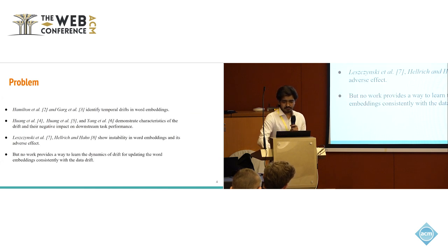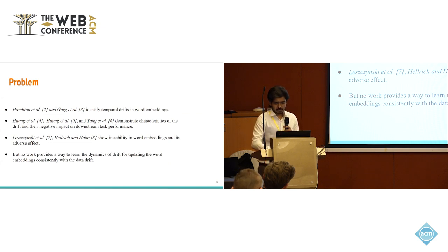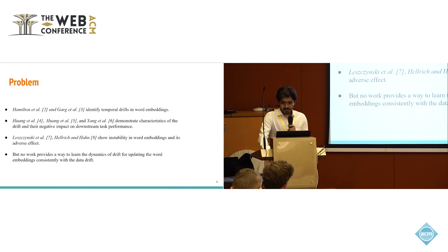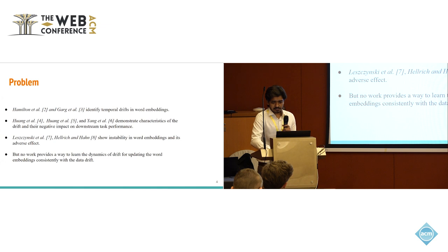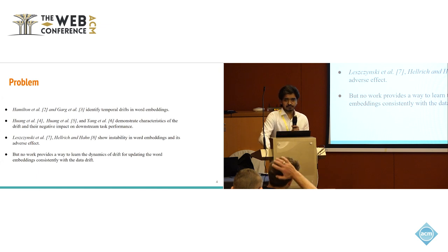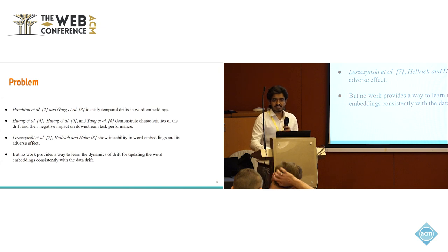Studies have been done which show temporal drift in word embeddings and its negative impact on downstream task performance. Studies like Hamilton et al. and Gurg et al. identified temporal drift in word embeddings, where the semantic relationship between words changes over time. Studies like Wang et al. show negative impact of drift on downstream task performance. Similarly, research like Lezinski et al. shows instability in word embeddings and its adverse effect, where word embedding algorithms exhibit very high sensitivity to training data.